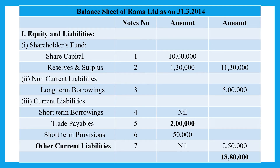The first one is equity and liabilities. Shareholders' fund — share capital and reserves and surplus. Share capital per working note number 1 is ₹10,00,000 and reserves and surplus per working note number 2 is ₹1,30,000, giving a total shareholders' fund of ₹11,30,000. Non-current liabilities — one subheading is long-term borrowings, that is debentures ₹5,00,000. Current liabilities has 4 sub-titles: short-term borrowings, trade payables, short-term provisions, and other current liabilities. Grand total on the liabilities side is ₹18,80,000.